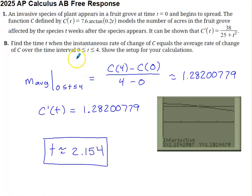Part B asks us to find the time when the instantaneous rate of change of C is equal to the average rate of change of C on the interval zero to four. Show the setup for your calculation. So the first thing that I did was I said, well, I want to find the average rate of change of C. The average slope or the average rate of change of C on the interval zero to four is going to be a regular old slope calculation connecting the endpoints of the graph on the interval zero, four.